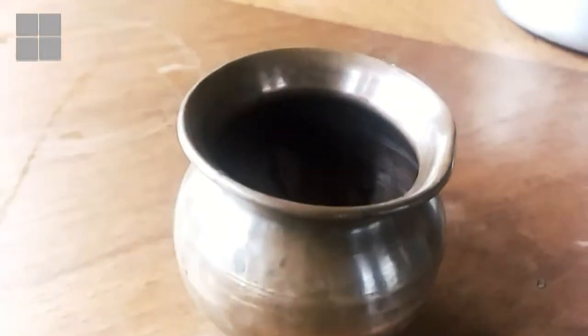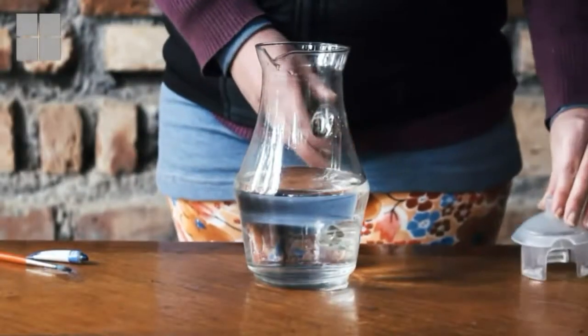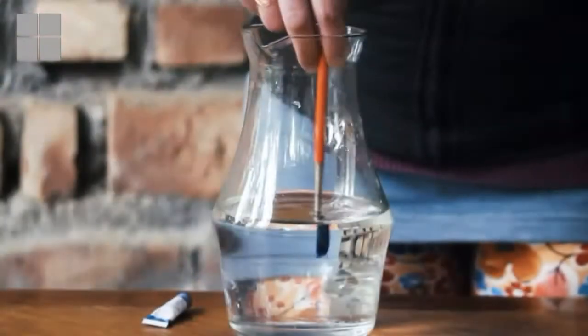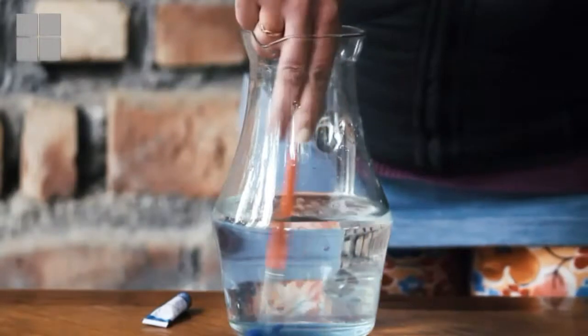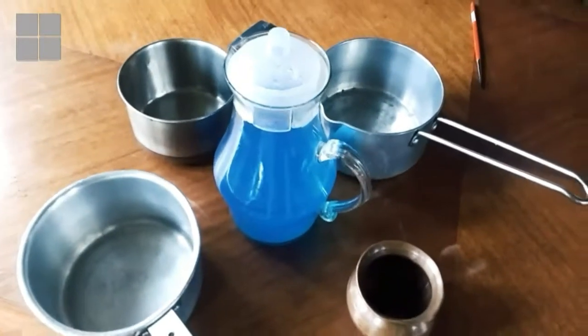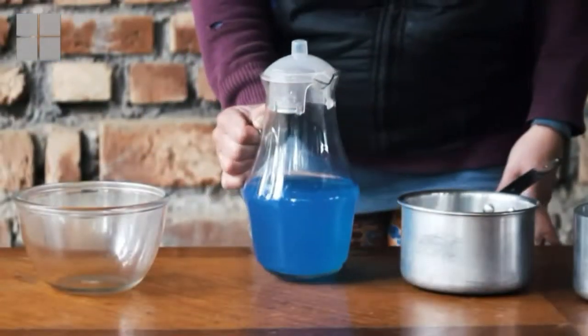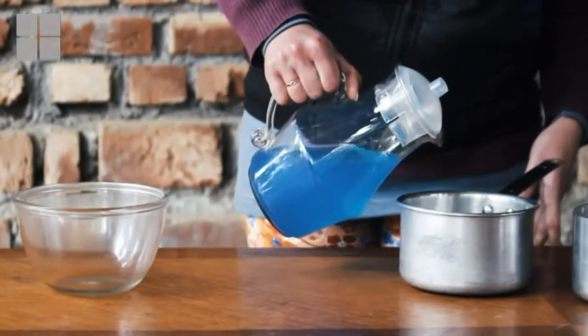Let us pour water one by one to see which is better. Now I'm coloring the water so that we can see the flow. We are ready. Let us start with the first pan, which is my favorite one. I usually make coffee in this.